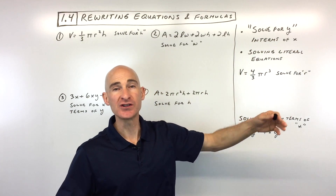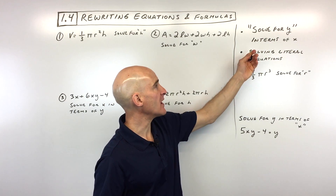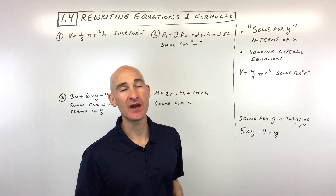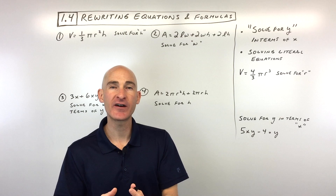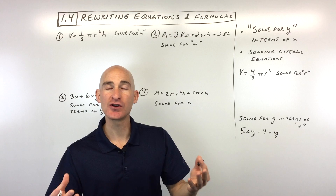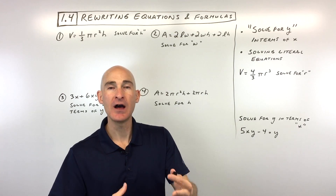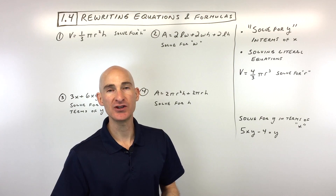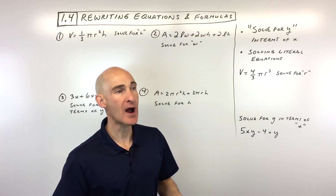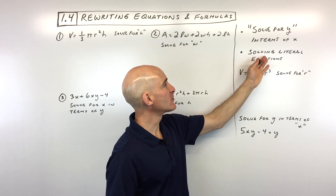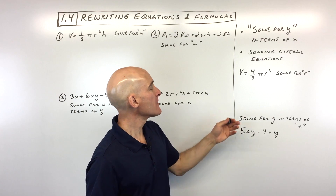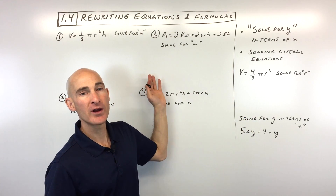Rewriting equations or formulas is oftentimes phrased as 'solve for y' or 'solve for y in terms of x,' which means you want to get that variable by itself on one side of the equation — everything else on the other side. It's just a way of rewriting formulas into a more friendly form so you can use them to solve other types of problems. This is also referred to as solving or rewriting literal equations.